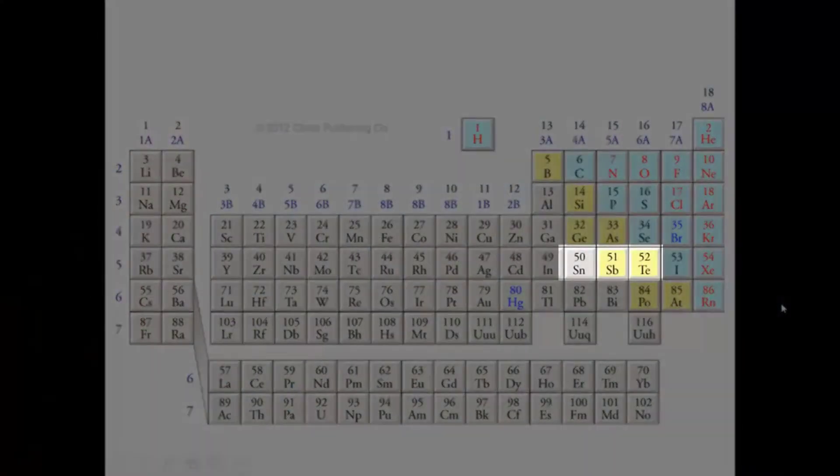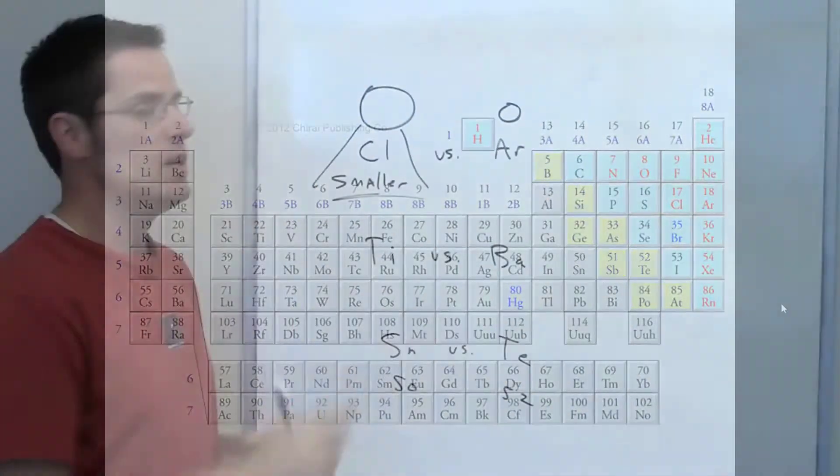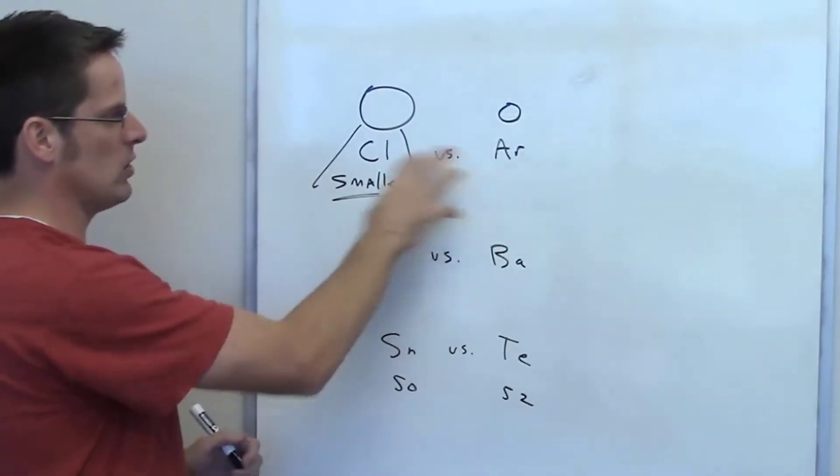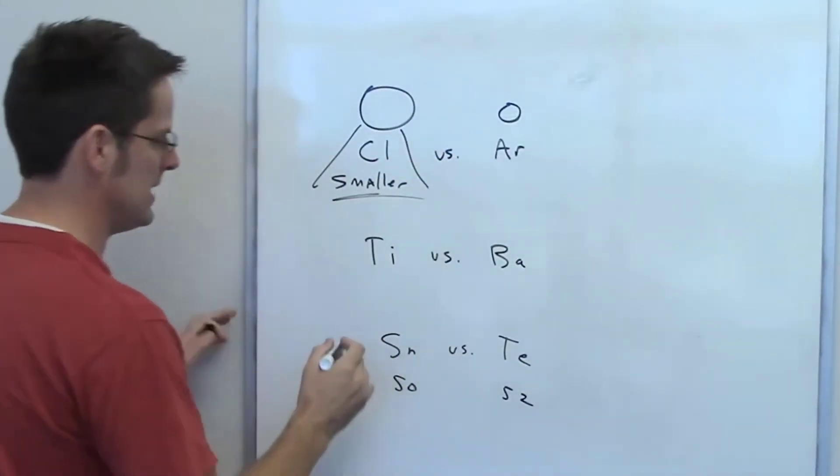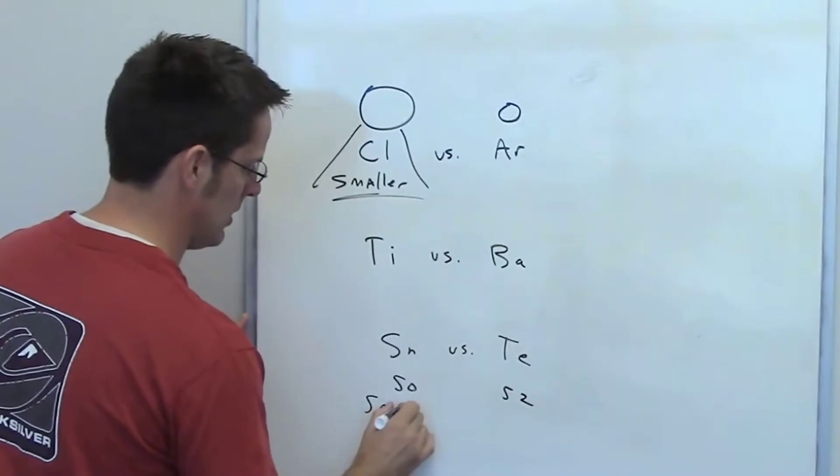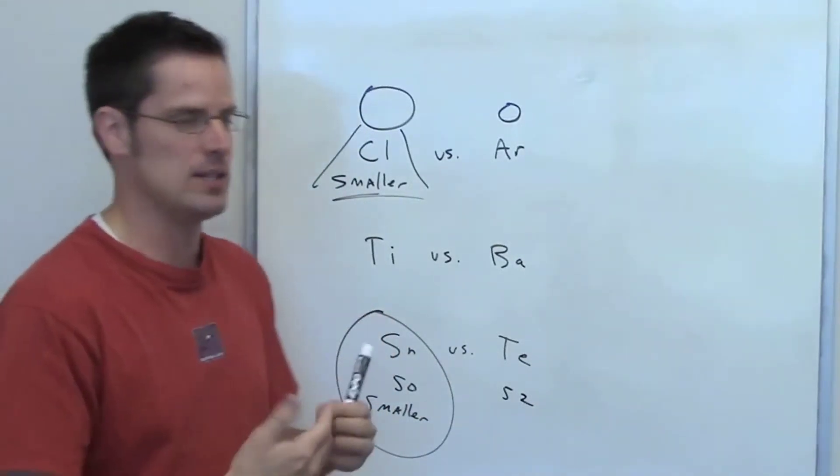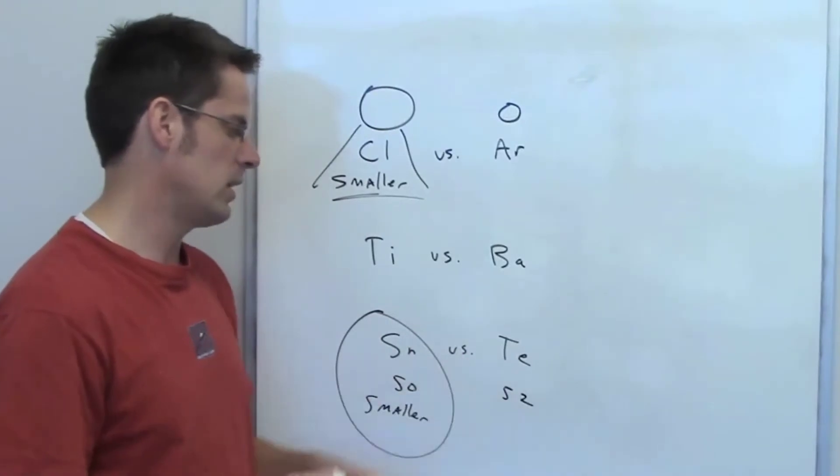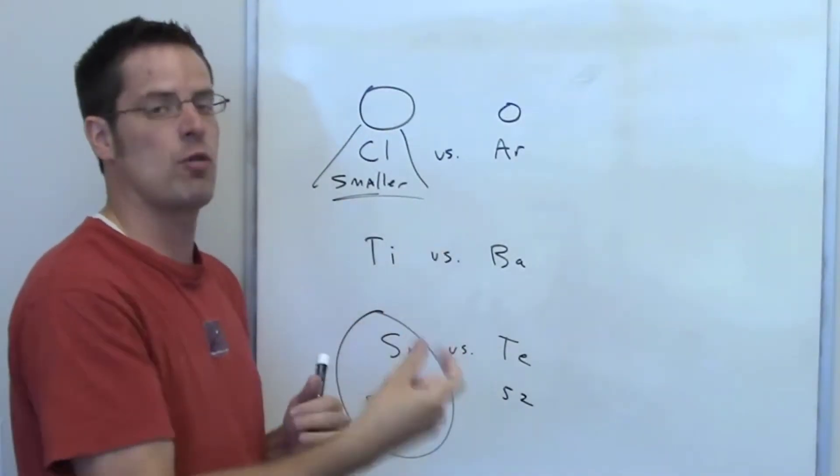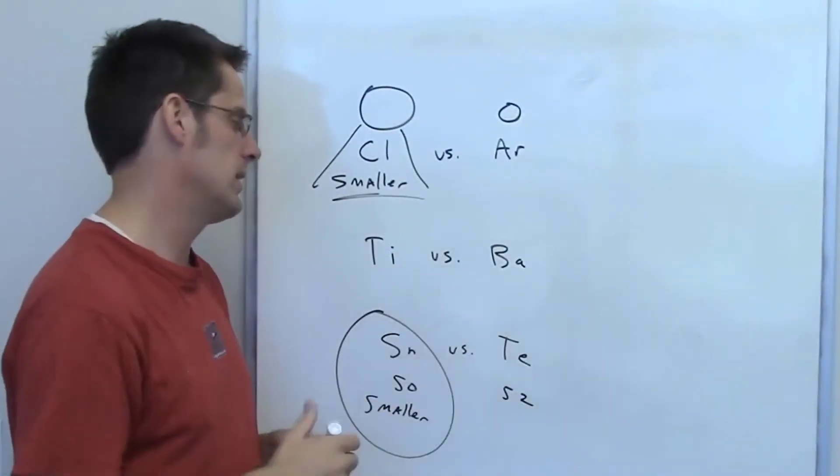Tin and tellurium, just like chlorine and argon, are in the same row, and tellurium is to the right. For the same reasons that I argued between chlorine and argon, tin is also going to have the smaller first ionization energy. It has fewer protons in its nucleus, same exact row. Tellurium is going to be tinier and therefore harder or more difficult to remove an electron from.